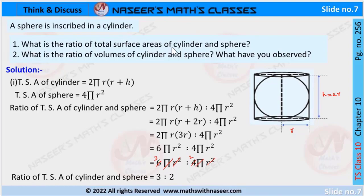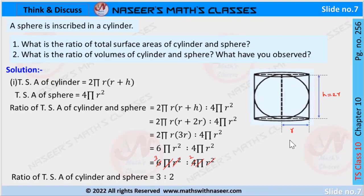The second question is: what is the ratio of the volume of the cylinder and the sphere? What have you observed? According to the given problem, a sphere is placed inside a cylinder. If r is the radius of the cylinder, then the diameter of the sphere is 2r.